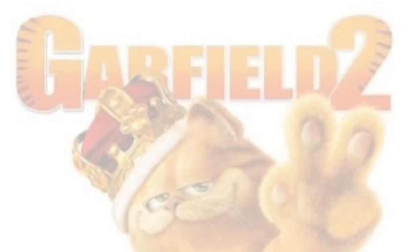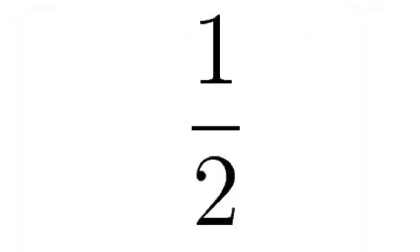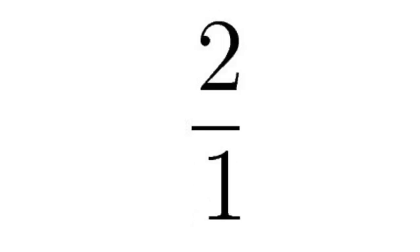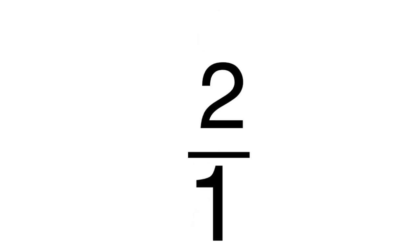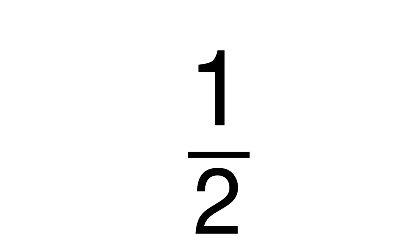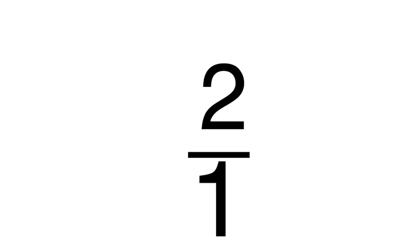For example, if I had the fraction 1 over 2 and switched the top and bottom numbers, I get 2 over 1. And that's the reciprocal of 1 over 2 — and 1 over 2 is the reciprocal of 2 over 1. Oh god, it's a loop.